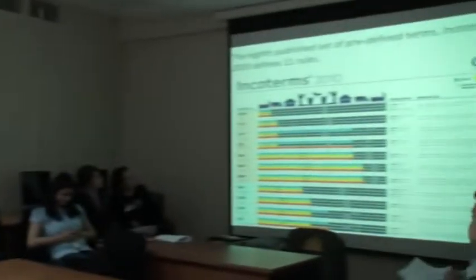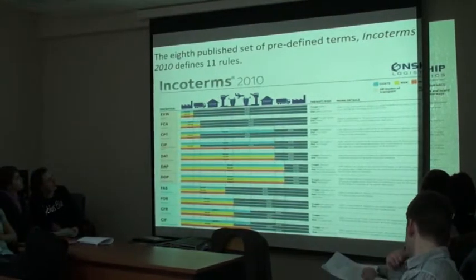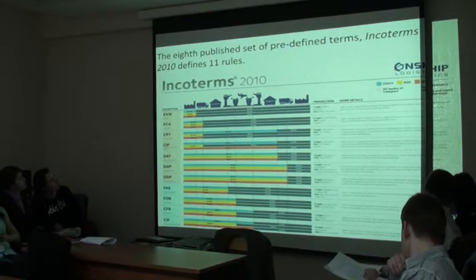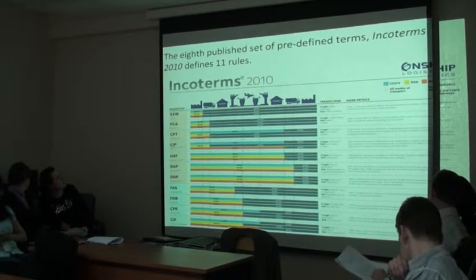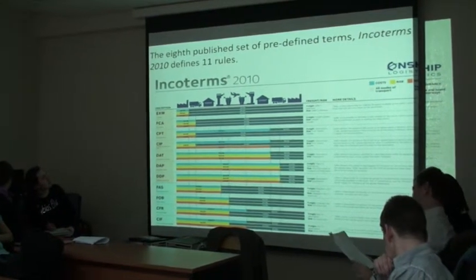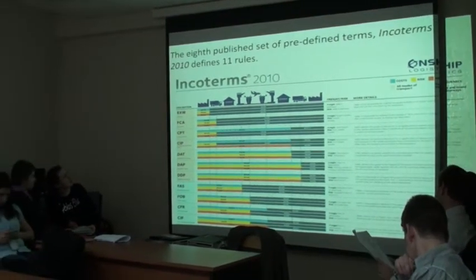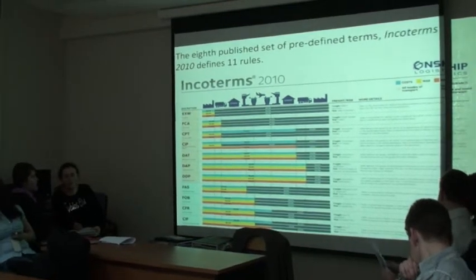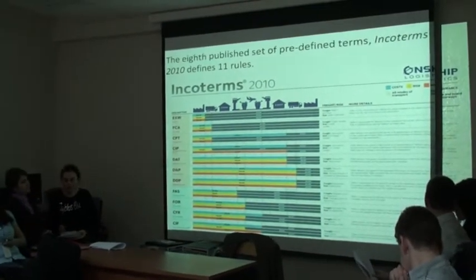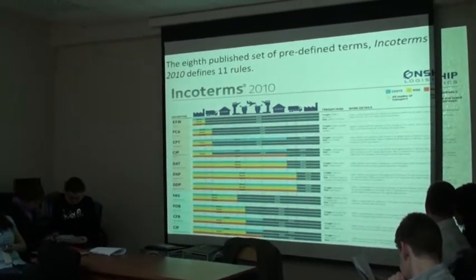CIP, Carriage and Insurance Paid: the containerized transport multimodal equivalent of CIF. The seller pays for carriage and insurance to the named destination point, but risk passes when the goods are handed over to the first carrier.